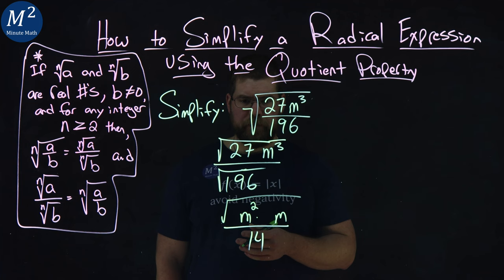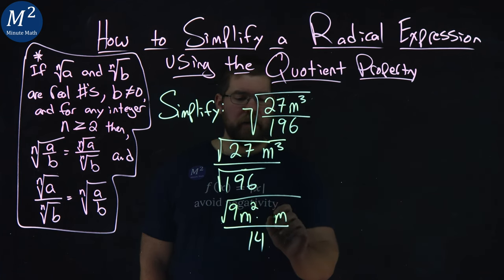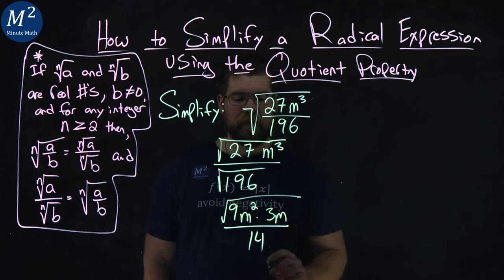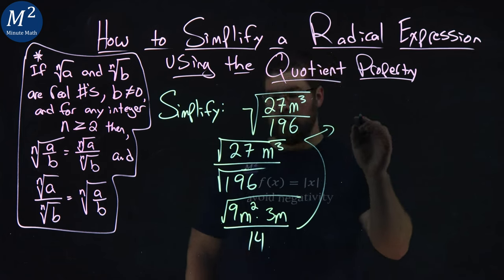What about 27? Well, 9 is a perfect square and 9 times 3 is 27. Our rules tell us that now we can separate this out to be two different square roots.